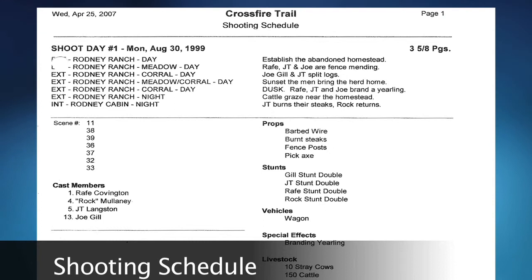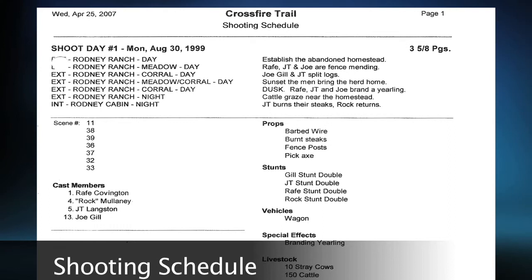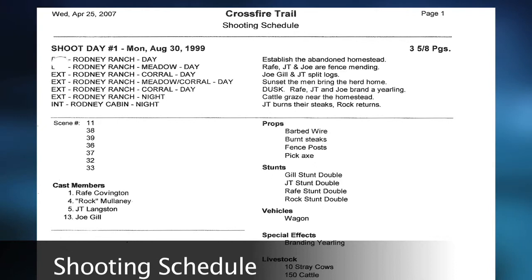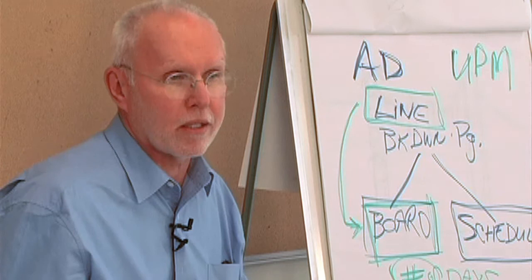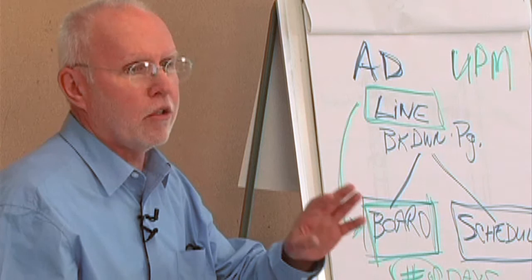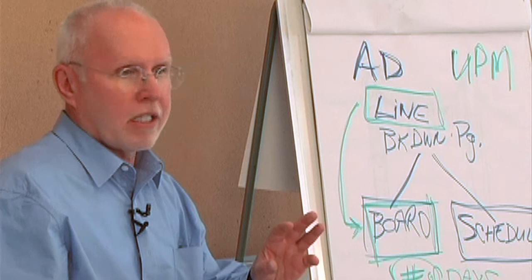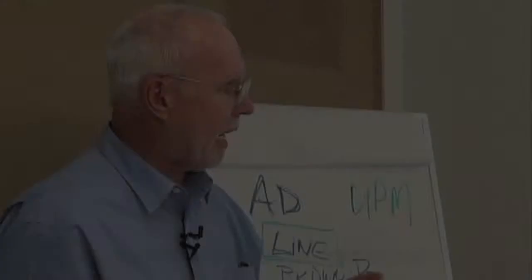Everyone else works off of the schedule because that's their information sheet. Take a look at that schedule — you'll see how it's got more information than the one-liner. It shows not only the cast members but also their names. It has all the props, all the stunts, vehicle, special effects, livestock. So you see how it's a lot more elaborate, and that's why you only publish it once and then work off of that. If you're in the movie and you're getting a new blue page of the one-liner — one of the pages is now blue — it doesn't have all the specifics, but it does say scene 11. You'll go to your original schedule to find out the content of scene 11.